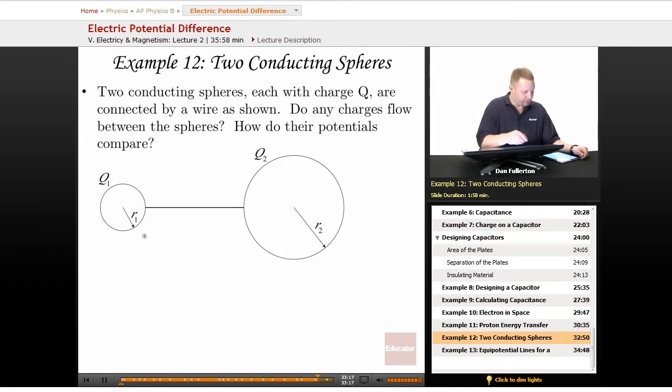That means if we look over here at Q1, V1 equals KQ1 over R1. Over here on the right-hand side, V2 equals KQ2 over R2. And because the potentials must be equal then, we could say that KQ1 over R1 must equal KQ2 over R2. Nice simplification we can make there.